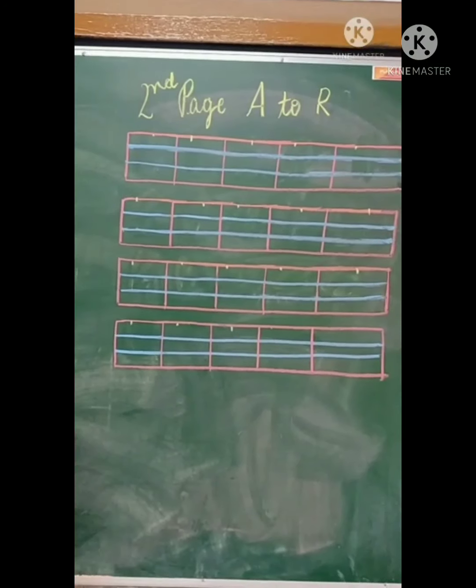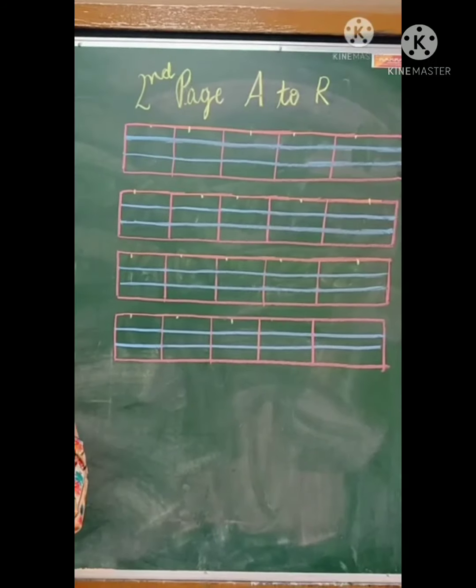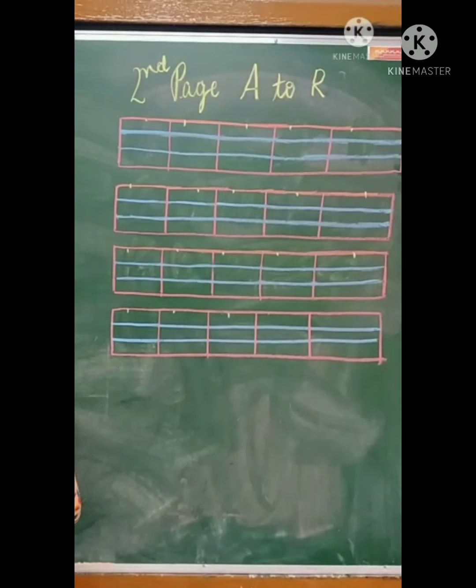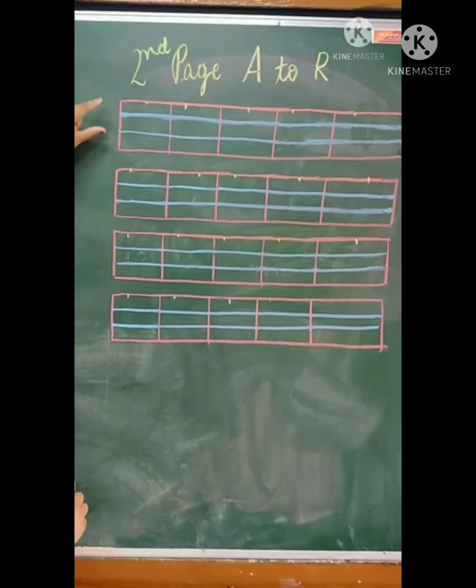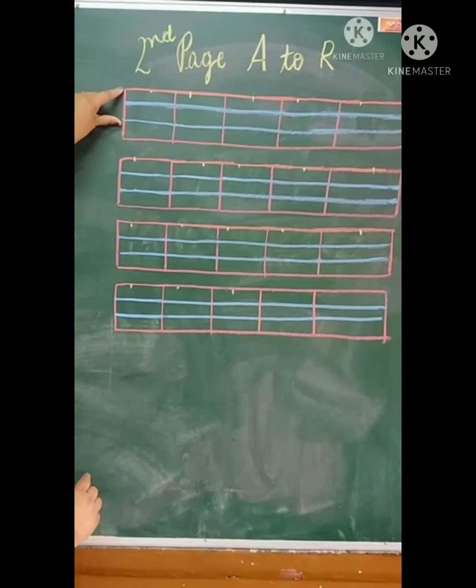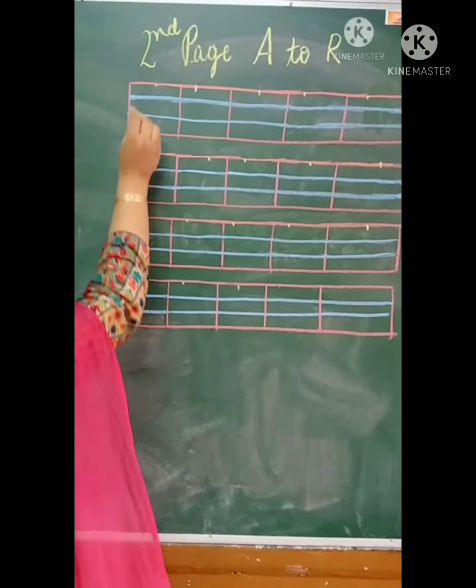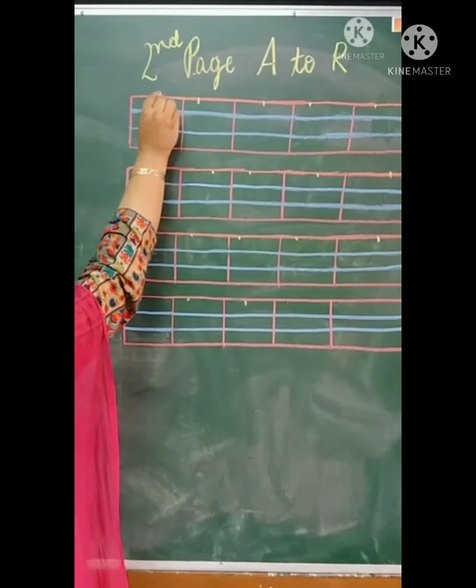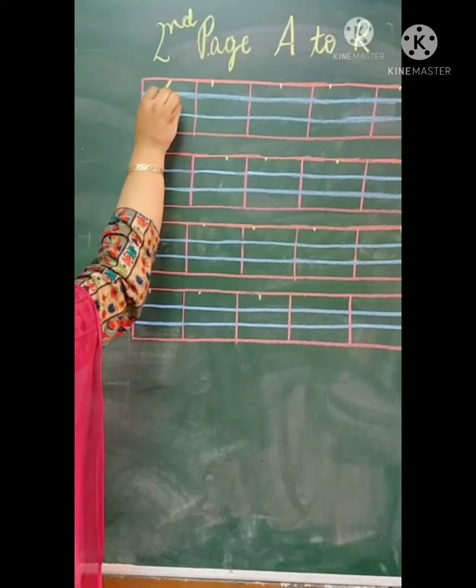Now we will write A to R. You have already learnt A to P, now today we will do A to R. So look on the blackboard, start from the bottom line, write A to R.